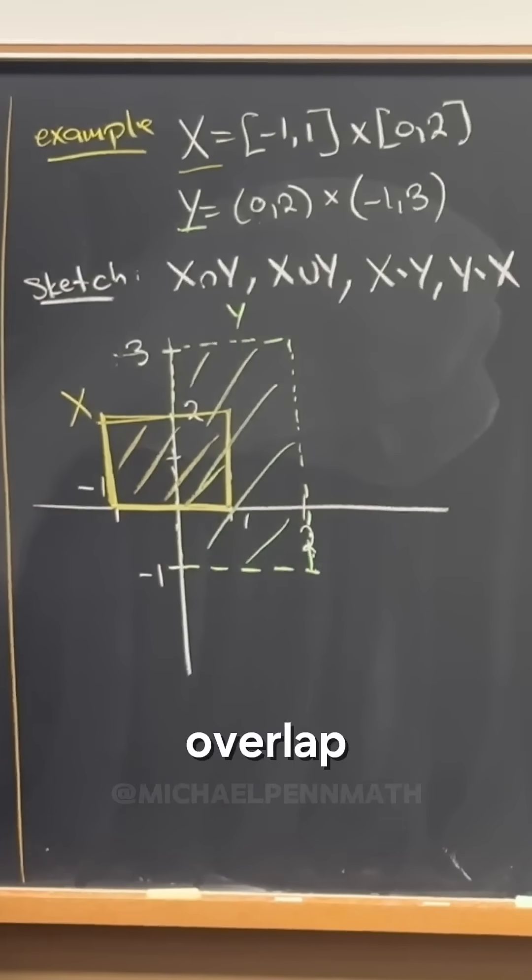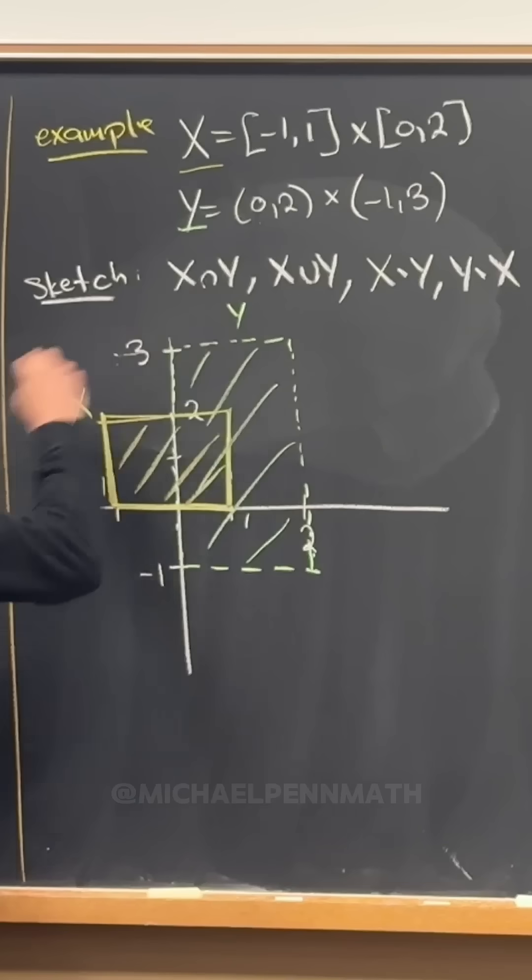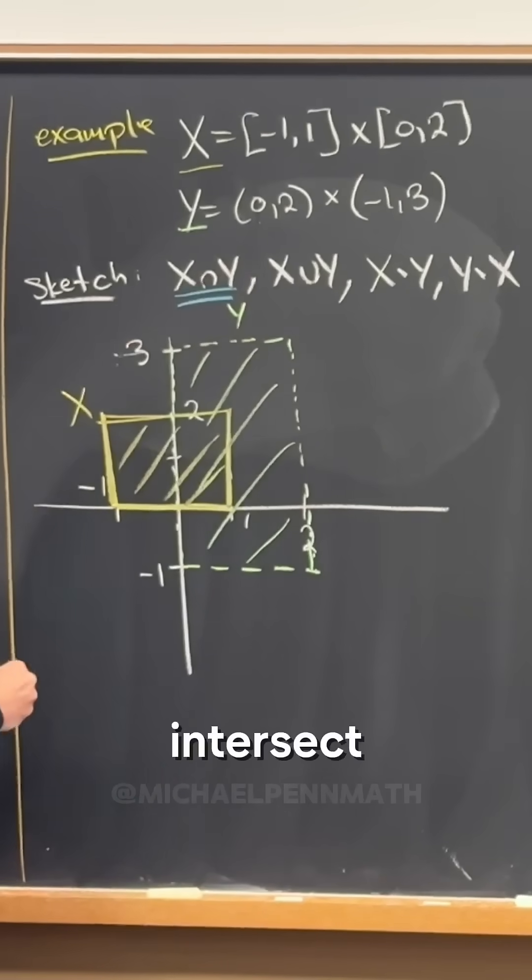I should have made Y blue, and then the overlap would be green. So there's X intersect Y, X intersect Y.